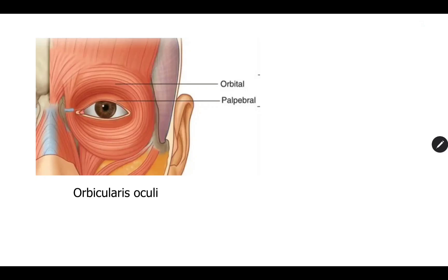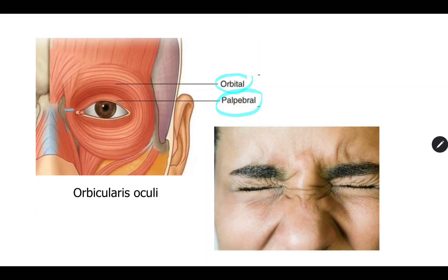Orbicularis oculi is located in front of the orbit. It has two parts: the orbital part and the palpebral part. The palpebral part is useful for soft closure of the eye, as in normal blinking. When both parts act together, they are important in forcefully or tightly closing the eye. If this muscle is paralyzed, the person will not be able to close the eye.